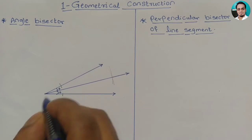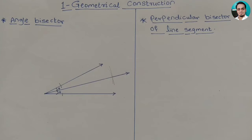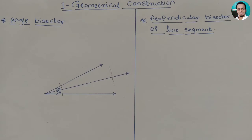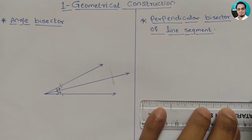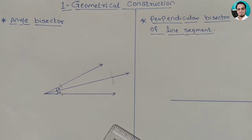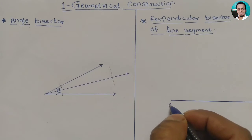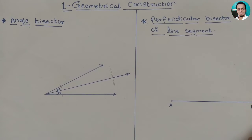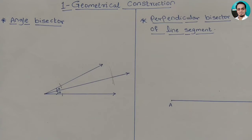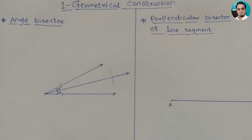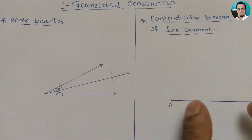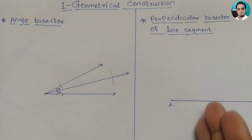Now we see what is the perpendicular bisector of a line segment and how to draw it. We draw a line segment AB. The perpendicular bisector divides the length AB into two equal parts and is perpendicular to it.